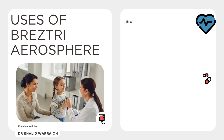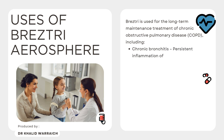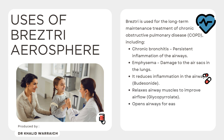Uses. Breztri is used for the long-term maintenance treatment of chronic obstructive pulmonary disease, including chronic bronchitis — persistent inflammation of the airways — and emphysema — damage to the air sacs in the lungs. It reduces inflammation in the airways, relaxes airway muscles to improve airflow, and opens airways for easier breathing.